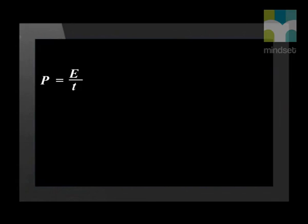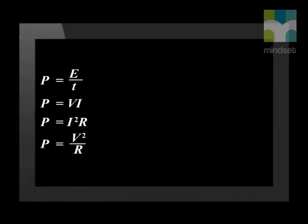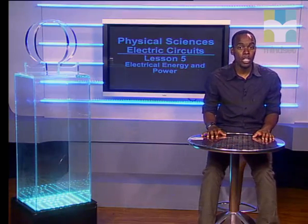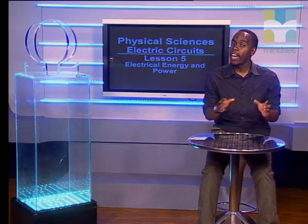To summarize, in this lesson we learned that stored chemical energy in a cell is converted into electrical energy in a circuit. The rate at which this electrical energy is converted into other forms of energy is called power. Power can be expressed using various mathematical equations: power equals energy divided by time; it can also be expressed as potential difference times current; and then we derived two more equations using Ohm's law — P equals I squared times R, and P equals V squared over R. These equations are very important and will help us in future to solve energy problems in both series and parallel circuits.